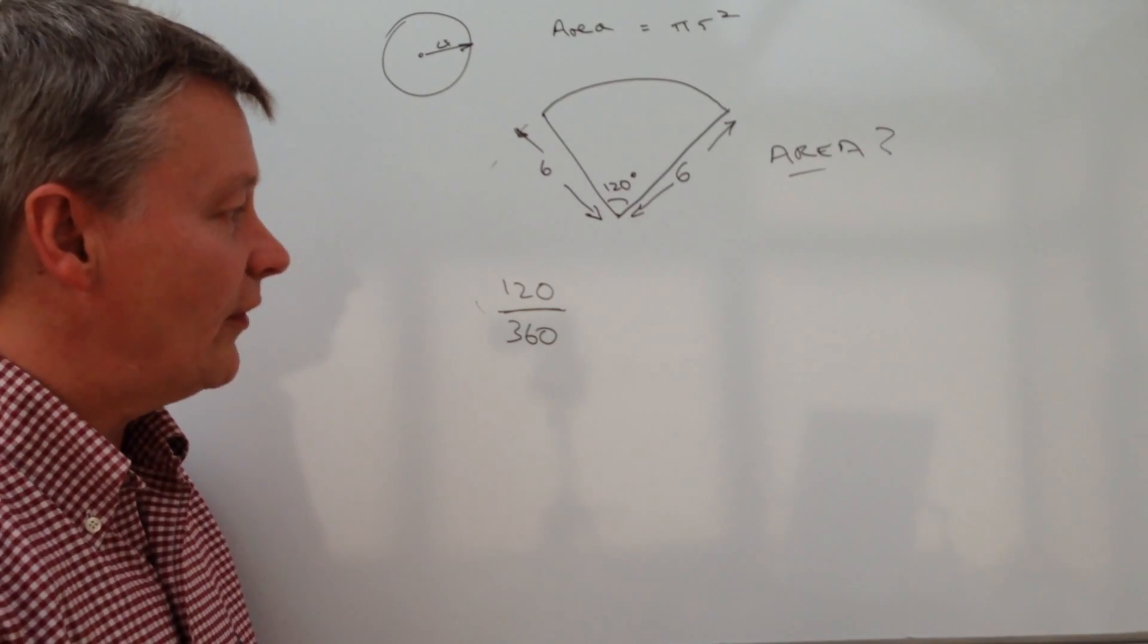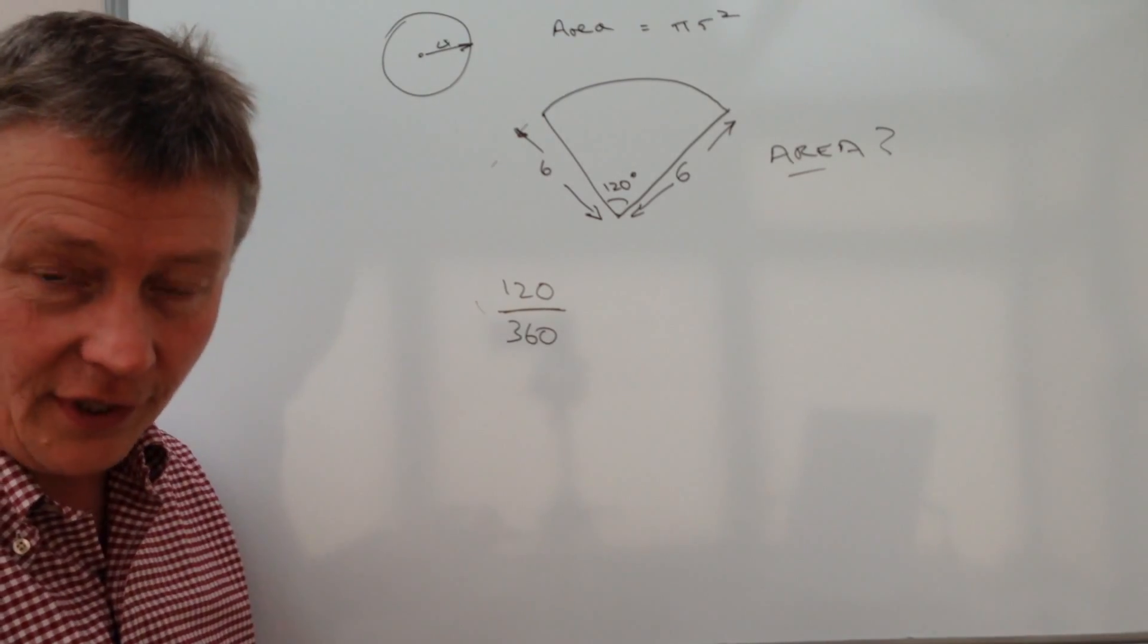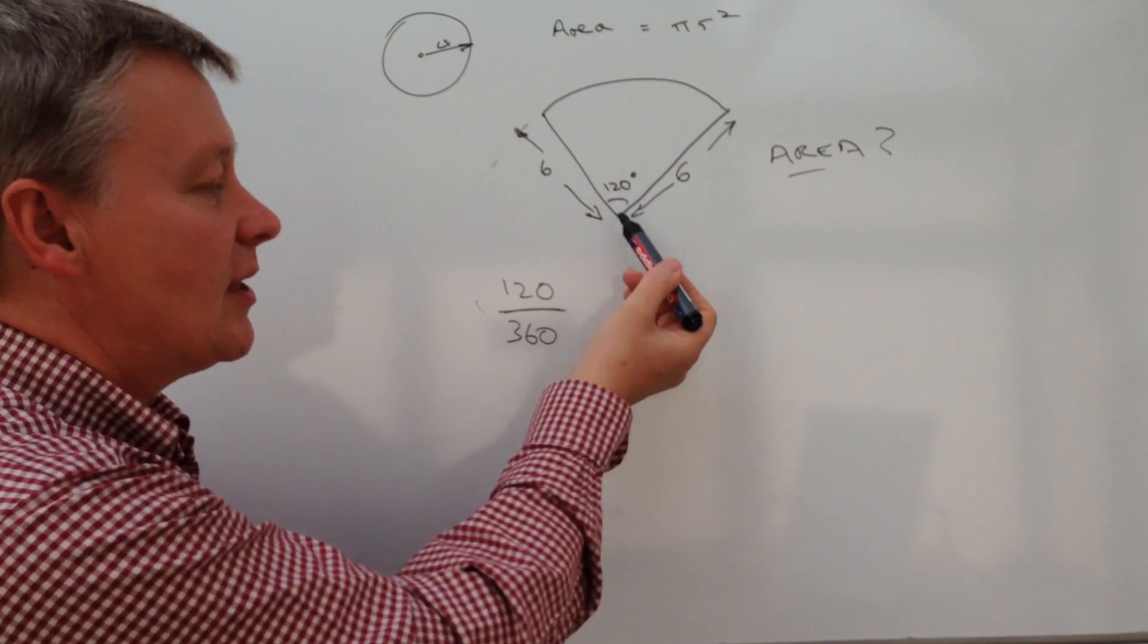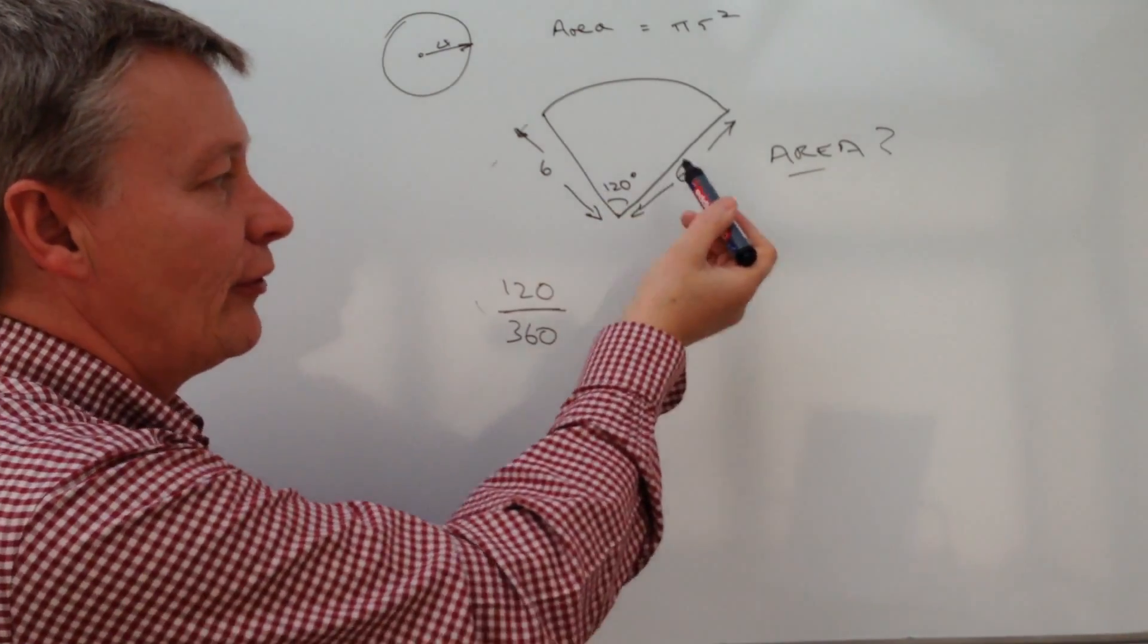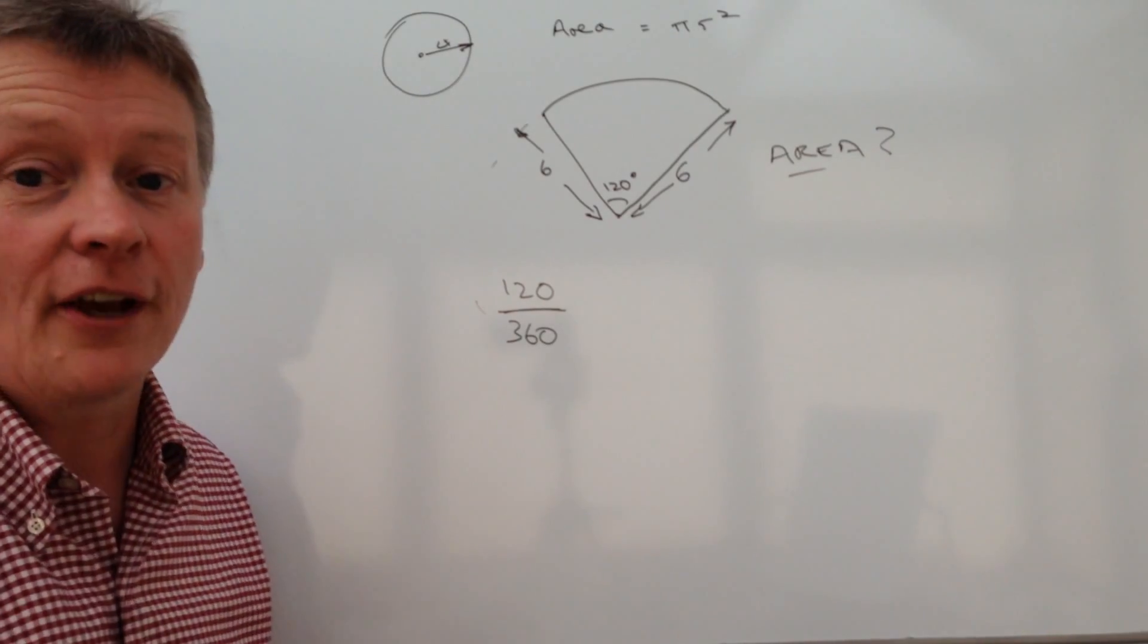So actually what we've got there is a portion of the circle or a fraction of the circle. And the fraction that we've got is 120 degrees out of the full 360 that we would have if we were working out the full area.